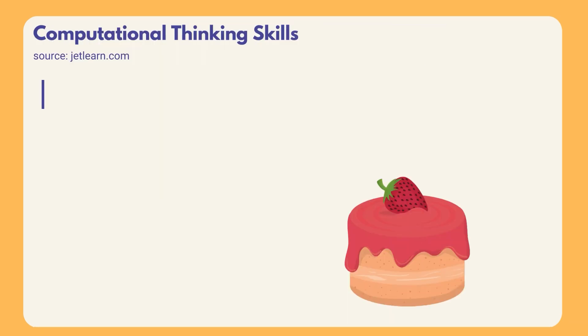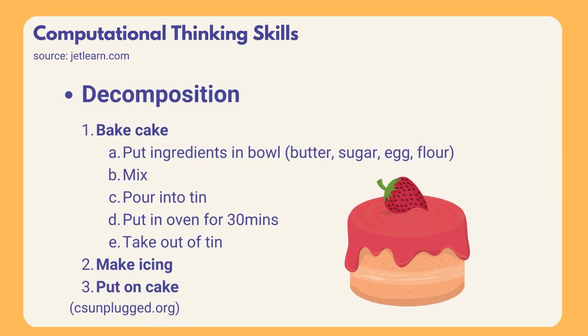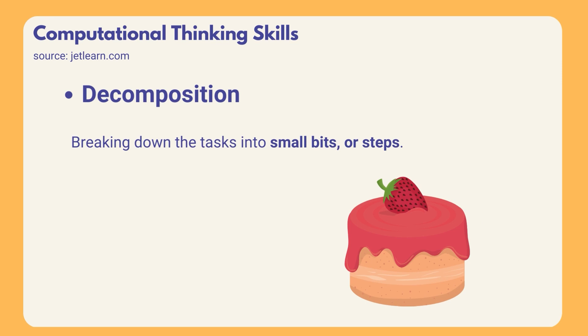The first skill is decomposition. Let's say we will make a cake. There are three main steps: bake cake, make icing, and lastly put on cake. And there are sub-steps while we are baking a cake, like put ingredients in bowl, mix, pour into tin, put in oven for 30 minutes, take out of tin. So what have we done here? We have broken down this task into small bits or steps. This is where a complex problem is broken into a simpler problem.